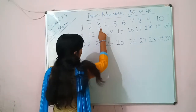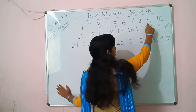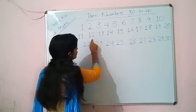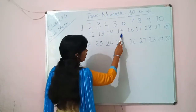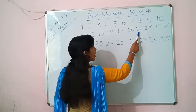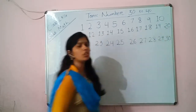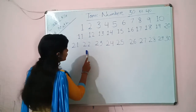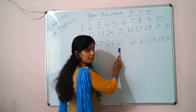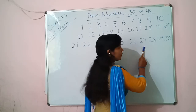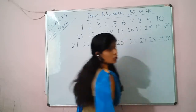1, 2, 3, 4, 5, 6, 7, 8, 9, 10. 11, 12, 13, 14, 15, 16, 17, 18, 19, 20. 21, 22, 23, 24, 25, 26, 27, 28, 29, 30.